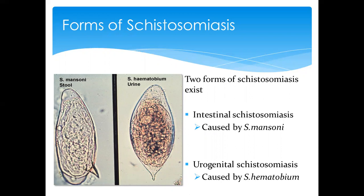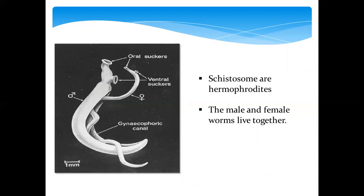The two forms we will look at are intestinal schistosomiasis, mostly caused by Schistosoma mansoni — called intestinal because the eggs are shed via stool — and urogenital schistosomiasis caused by Schistosoma haematobium, where eggs are shed via urine. An important differentiator is the morphological shape of the eggs: mansoni has a lateral spine, and haematobium has a terminal spine — an important feature used for diagnostics.